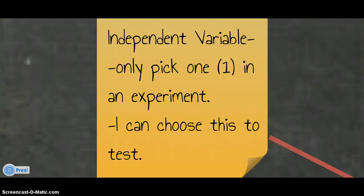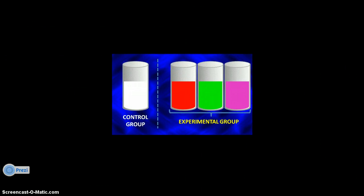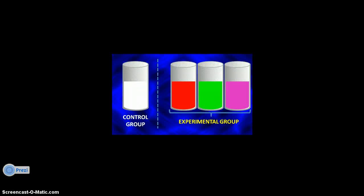Whenever we have an experiment, there are things that we can change. A variable is something that we can change. An independent variable — one of the rules is that we can only pick one thing, one change, to test in an experiment. In our scenario looking at different types of drinks and their effect on heart rate, the one thing I had full control over was the type of drink. That's one thing we're testing: type of drink.